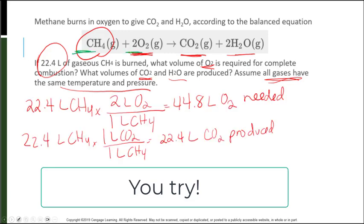The first one, going from CH4 to O2, we had a 1 to 2 ratio. Again, make sure that your units diagonal cancel out. So I should need 44.8 liters of oxygen.